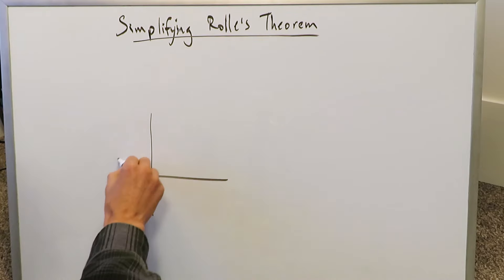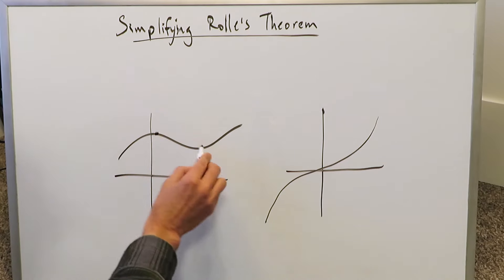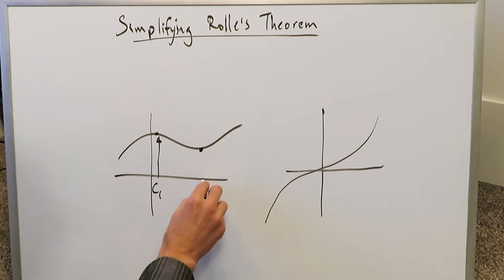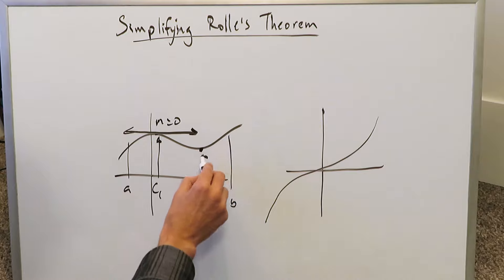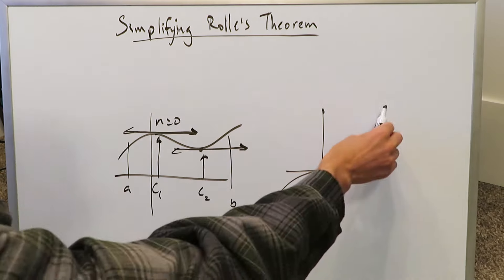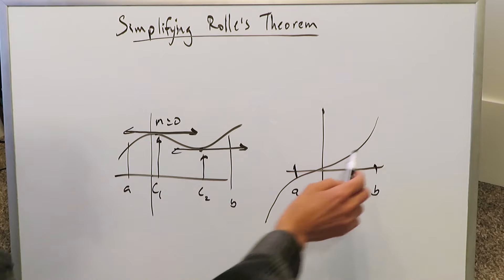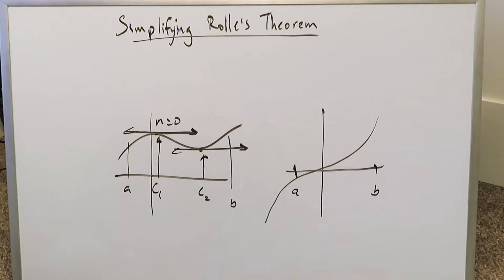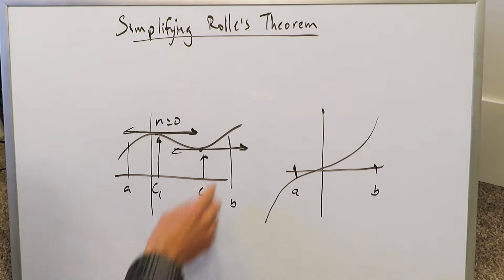Consider two graphs. On one function, at points C1 and C2 within some interval, you can demonstrate horizontal tangent lines with slope equal to 0. But on a strictly increasing function from A to B, it is very difficult to find a point where you will have a horizontal tangent line. Tangent lines will likely have positive slopes and generally will not be flat.